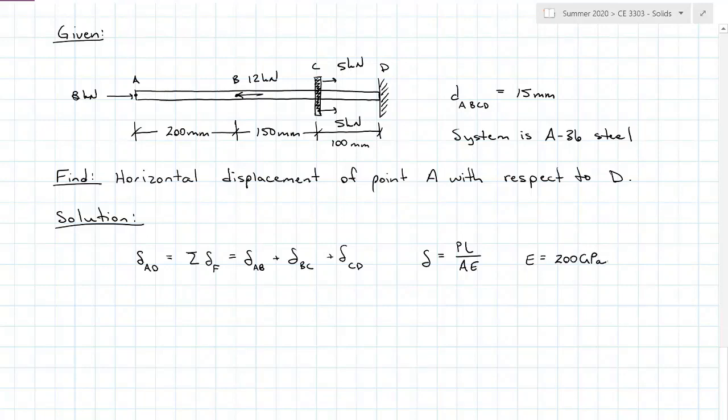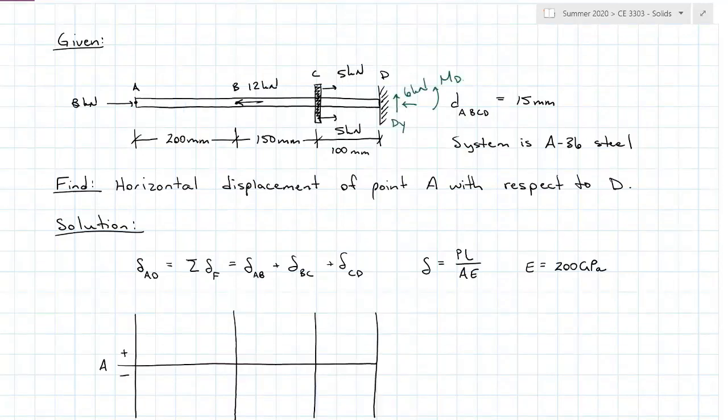I'm given the length and diameter, so I can find the cross-sectional area. The only thing I need to find is the load internally throughout my entire system. I'm going to do that with an axial force diagram. Solving for my reactions at fixed end D, I find that the horizontal axial force D is six kilonewtons to the left. That's the only one I need for my axial force diagram.